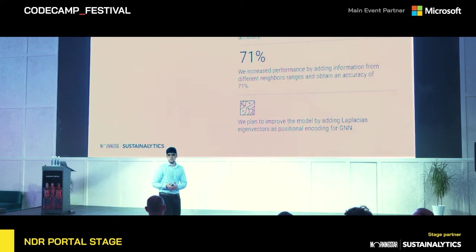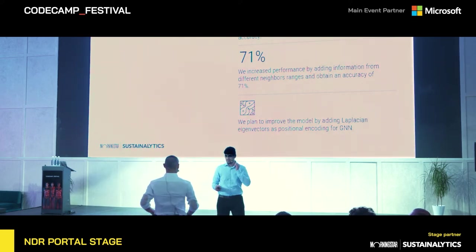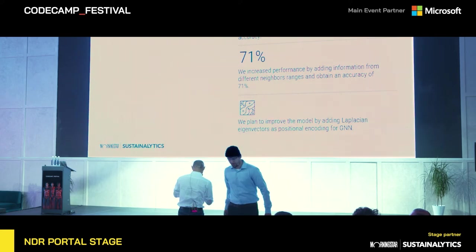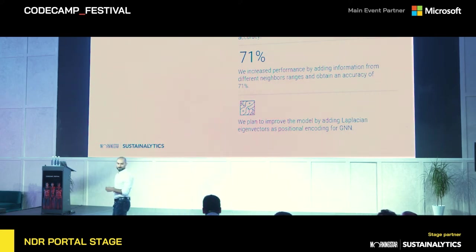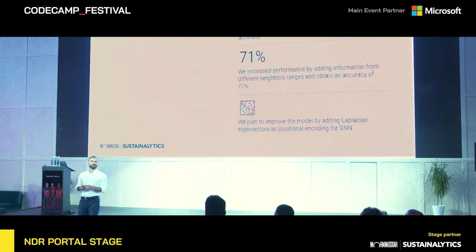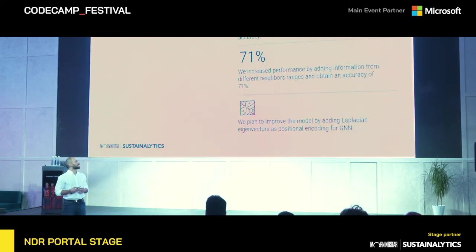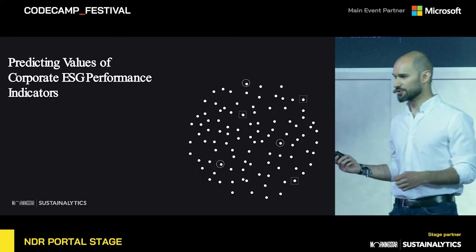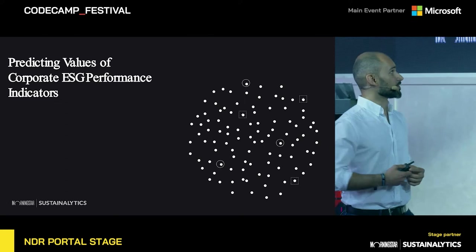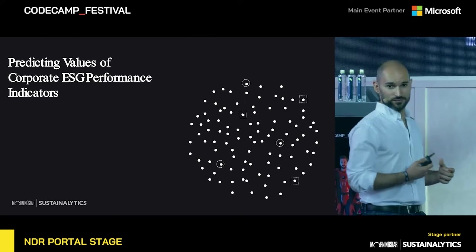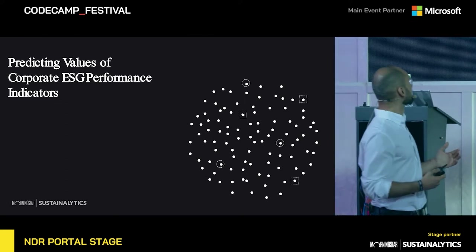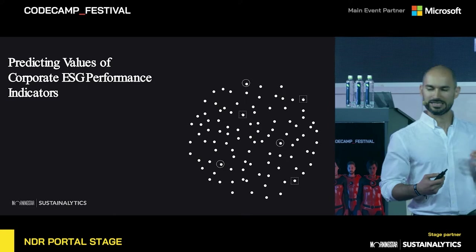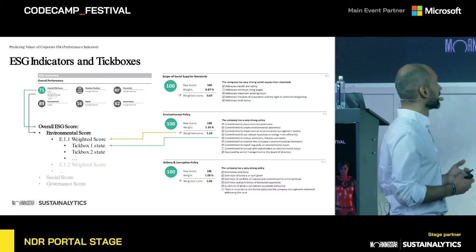Next is my colleague Armen. My name is Armen Inans, I'm a senior AI/ML research engineer at Morningstar, and I will present one more project that we have done using graph data. We built a graph neural network trained to predict ESG indicator scores for companies.